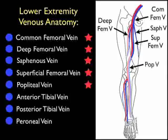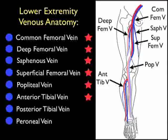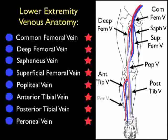Behind the knee, the superficial femoral vein becomes the popliteal vein, seen adjacent to the popliteal artery. At the level of trifurcation, the popliteal vein becomes three different calf veins: the anterior tibial vein coursing anteriorly onto the calf, the posterior tibial vein seen posteriorly, and the perineal vein to the lateral aspect of the calf. It's because these calf veins are so small that it's difficult to see them on bedside ultrasonography.